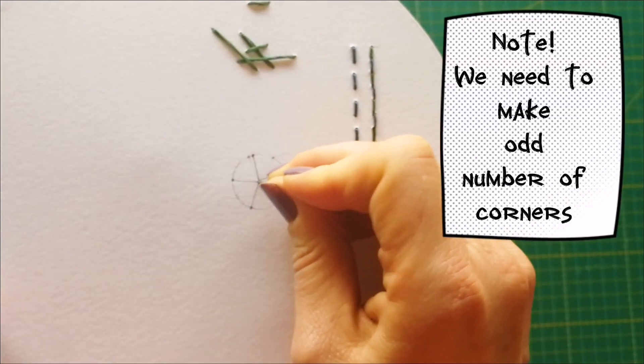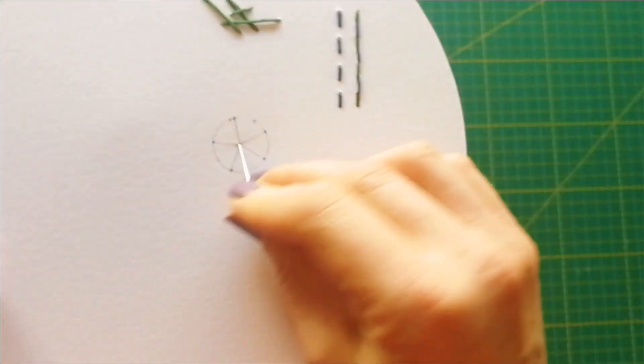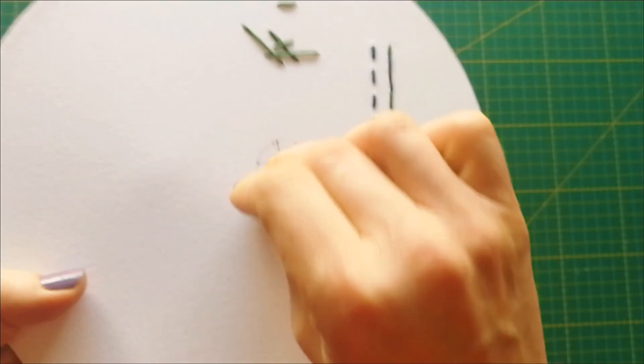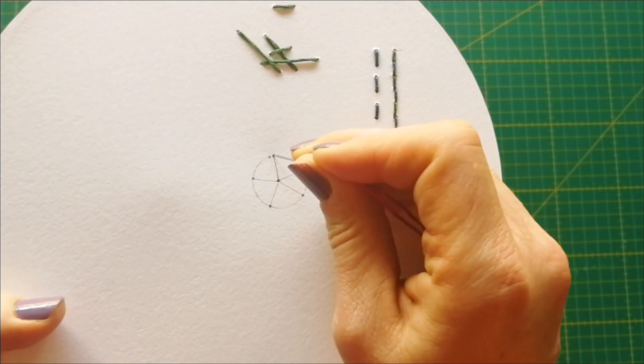I just want to remind you that we need to make an odd number of corners. We can make 3, 5, or 7. We need an odd number so our pattern will start forming.